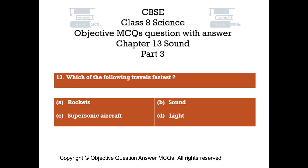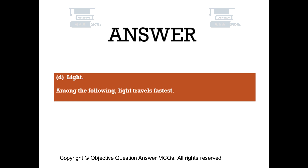Question number 13. Which of the following travels fastest? Option A – rockets. Option B – sound. Option C – supersonic aircraft. Option D – light. The right answer is option D. Among the following, light travels fastest.